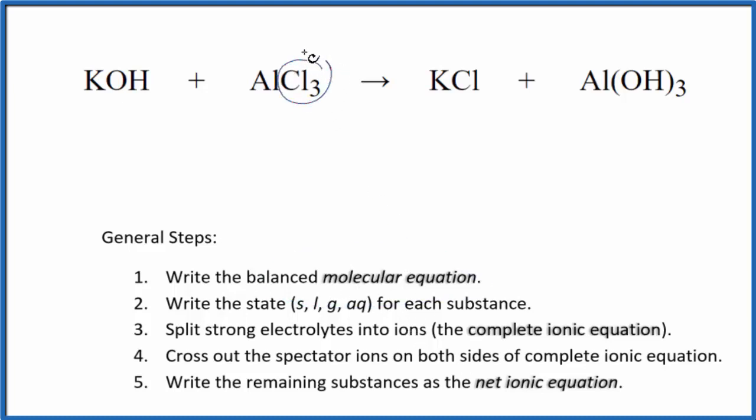You can see I have three chlorine atoms here and just one here. Let's put a three in front of the KCl. Now I have three potassium atoms, just one here. I'm going to put a three here. That gives me three hydroxides, but I have three hydroxides over here already. That's good, and we have one aluminum on each side. So we've balanced the molecular equation.